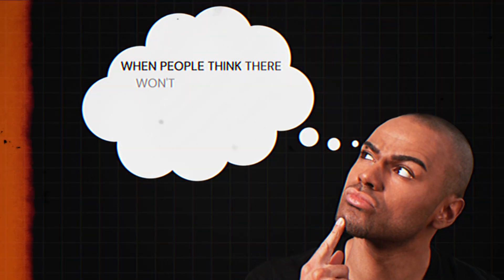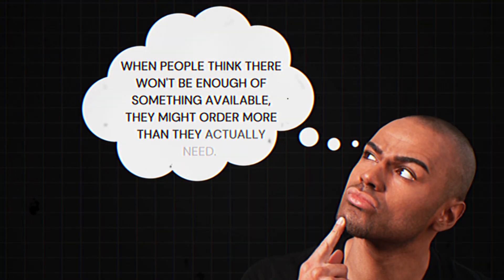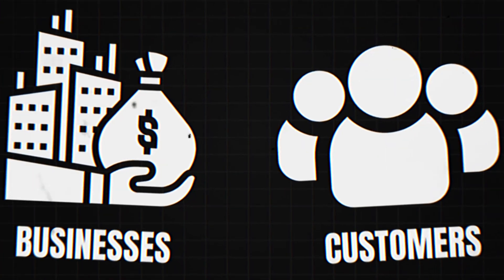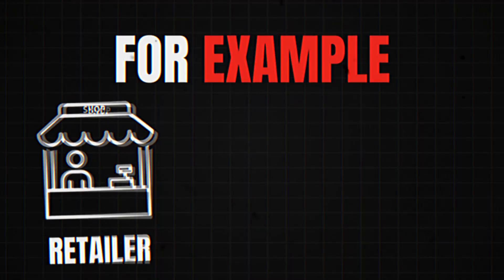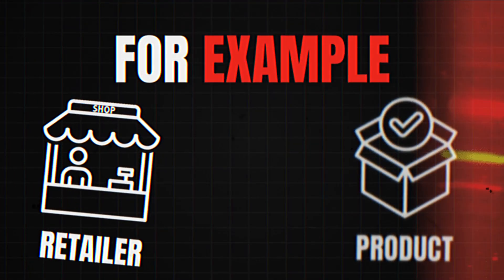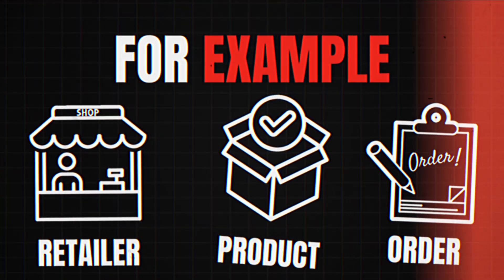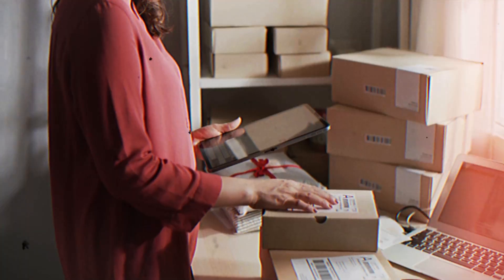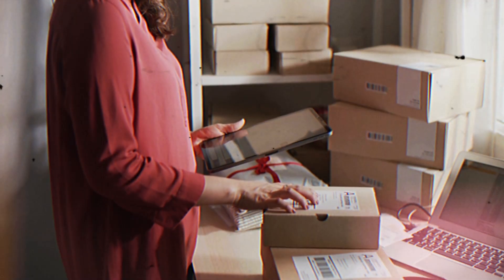Expecting Shortages. When people think there won't be enough of something available, they might order more than they actually need. This happens both with businesses and customers. For example, if a retailer believes there will be a shortage of a popular product, they might order a lot more of it. This excessive ordering can exaggerate the demand, making manufacturers believe there is a higher need than there really is.